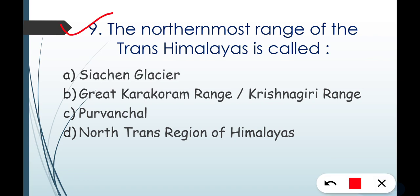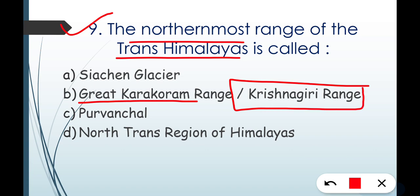Question number nine: the northernmost range of the Trans-Himalayas is called what? Trans-Himalayas are in Tibet, so it is China-related. The correct answer is the Great Karakoram Range, also called Krishnagiri Range. Option B is the correct answer.